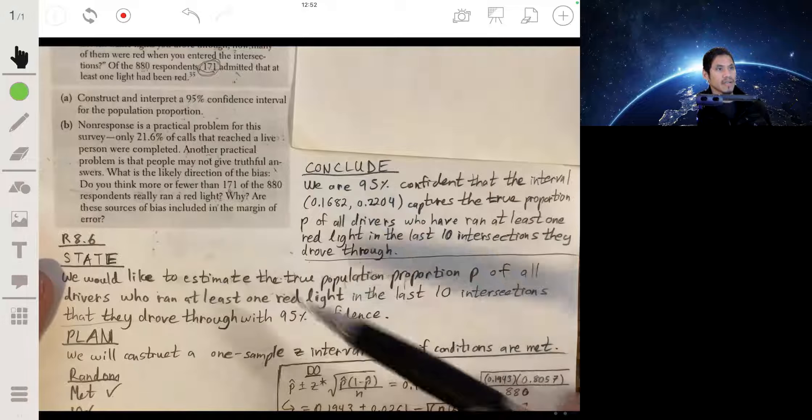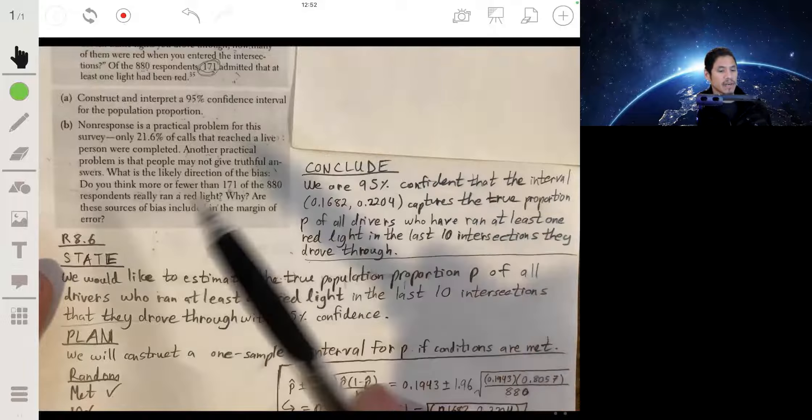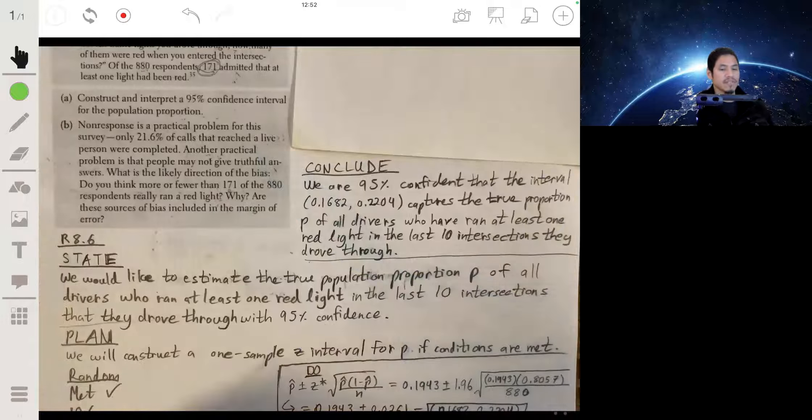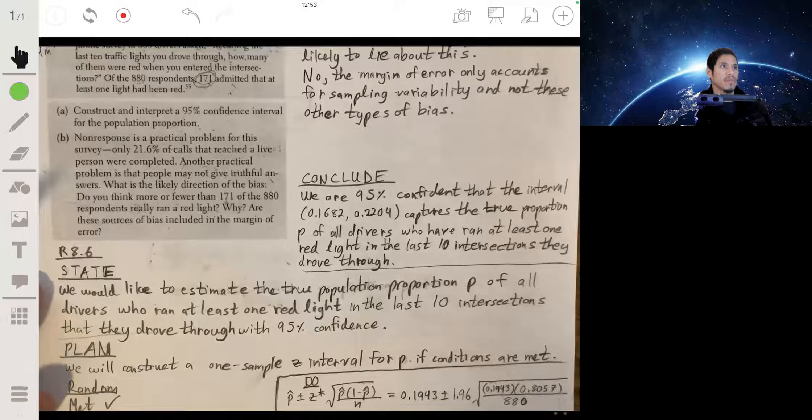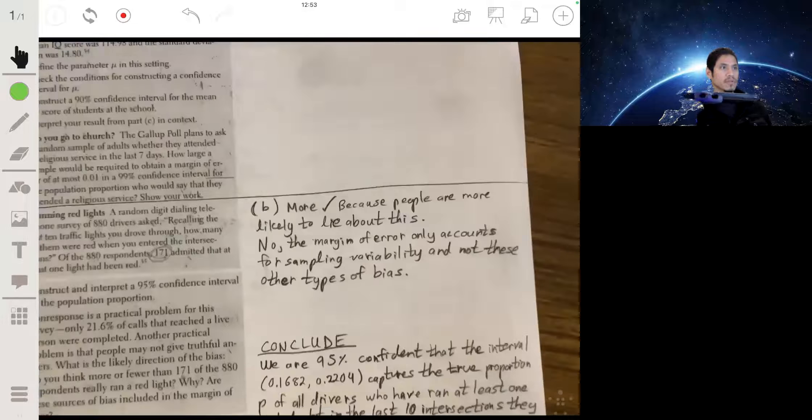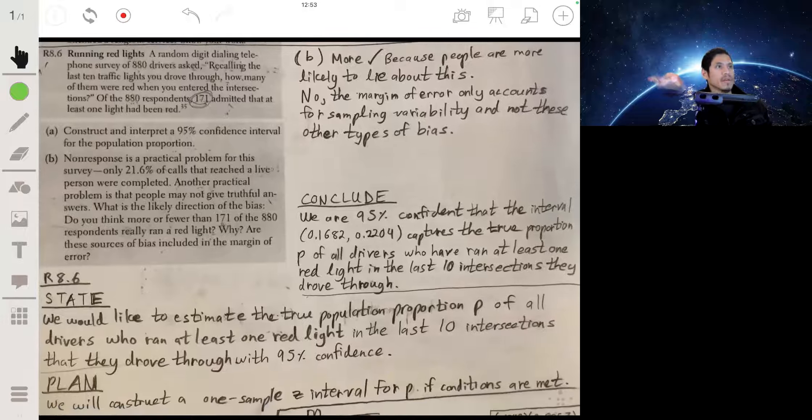And unfortunately, the techniques we use for these confidence intervals don't take care of this type of bias. It's not going to take care of response bias; it'll simply just take care of sampling variability. And so there's my answer written out.